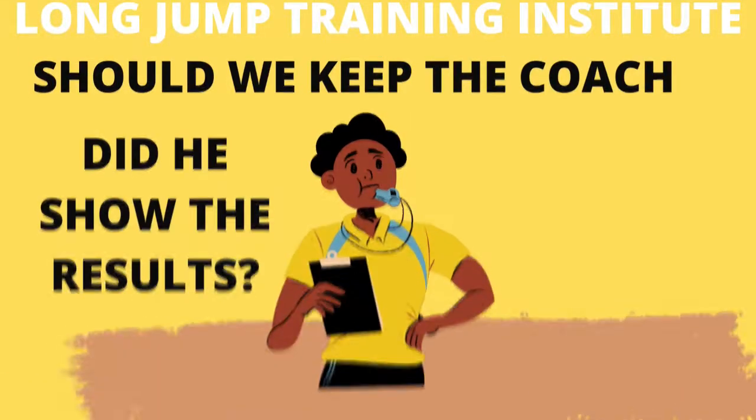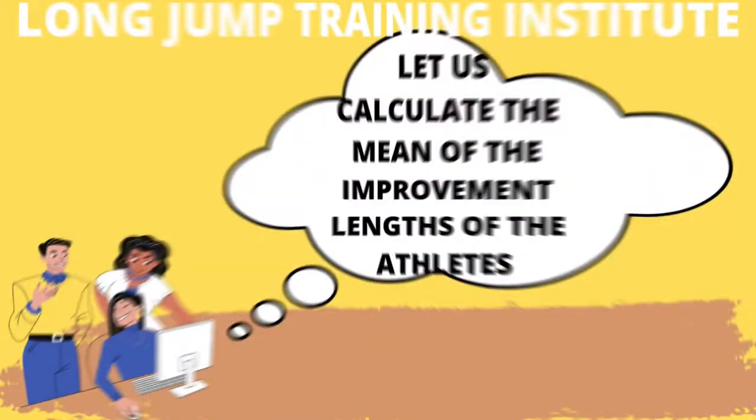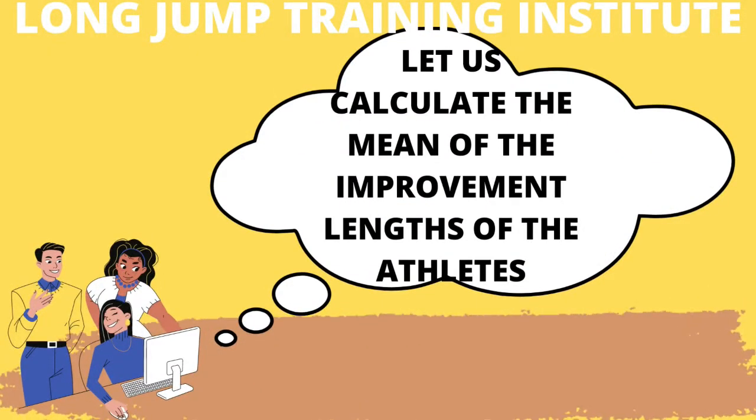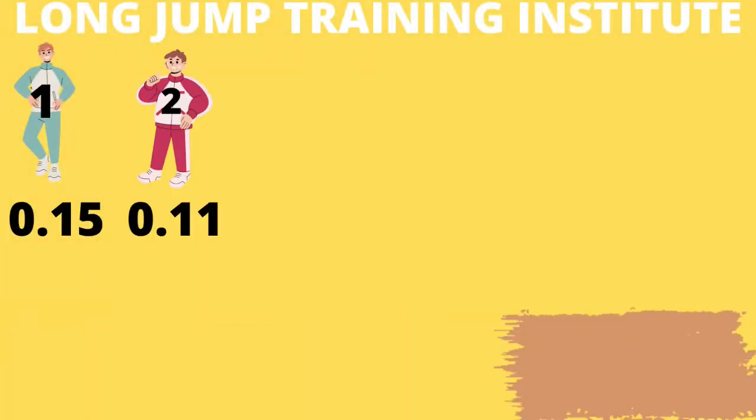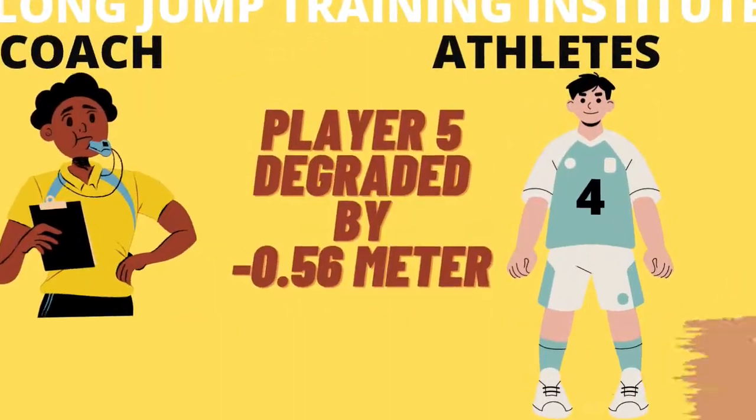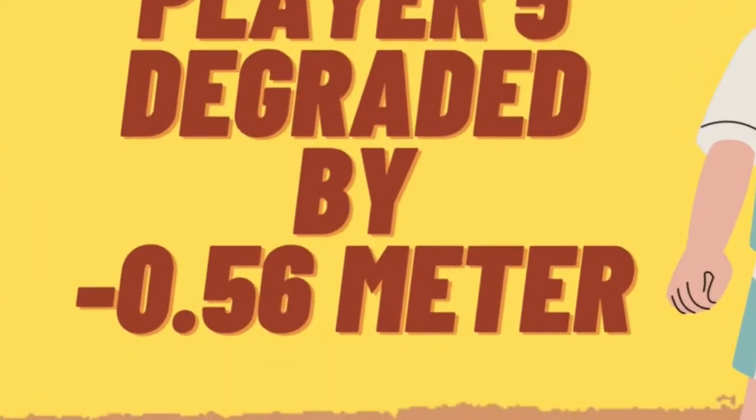The one-month duration has passed. The committee now calculates the mean value of improvement across all five athletes. They note down all improvement points: the first athlete improved by 0.15 meters, the second by 0.11 meters, the third by 0.06 meters, the fourth by 0.12 meters, while the fifth degraded by minus 0.56 meters.